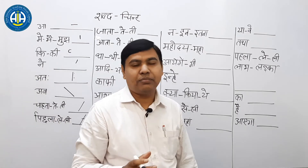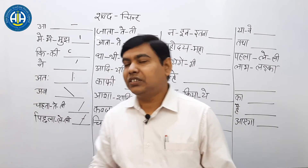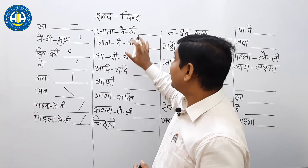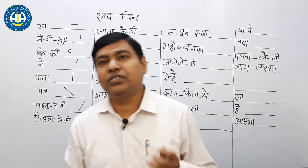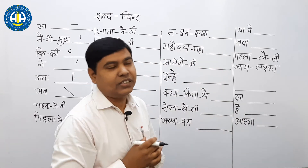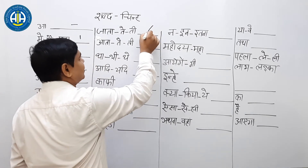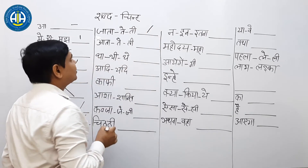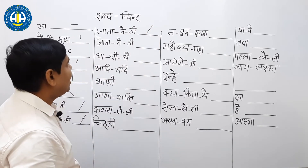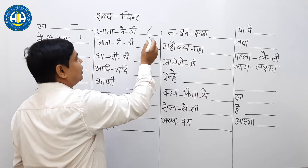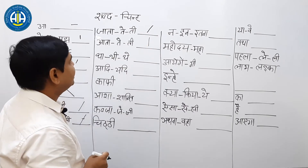फिर next देख सकते हैं: जाता, जाती — जैसा कि ये board पर है। जब का sound है तो सिर्फ 'जब' बना देना है, line से ऊपर बनाना है। आता, आते — इसमें 'तव' बना देना है, ऊपर बनेगा, line से।